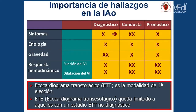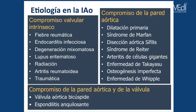La respuesta hemodinámica va a estar determinada por la función del ventrículo izquierdo y por la dilatación del mismo. Tengamos en cuenta que es una sobrecarga de volumen al ventrículo izquierdo. El estudio de primera elección va a ser la ecocardiografía transtorácica, que es la primera modalidad y generalmente nos da prácticamente toda la información que necesitamos. De haber algún tipo de limitación, podemos avanzar hacia otro estudio de mayor complejidad como un transesofágico, una resonancia — sobre todo para ver la aorta ascendente — o una tomografía computada.